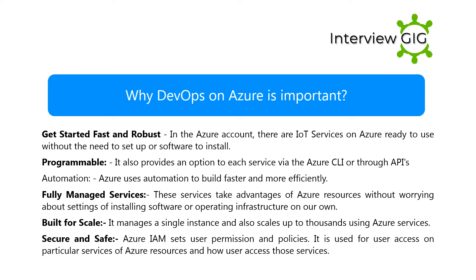Why is DevOps on Azure important? Get started fast and robust — in the Azure account, there are IoT services ready to use without the need to set up software to install. Programmable — it provides an option to access each service via the Azure CLI or through APIs. Automation — Azure uses automation to build faster and more efficiently. Fully managed services — these services take advantage of Azure resources without worrying about installing software or operating infrastructure on your own.